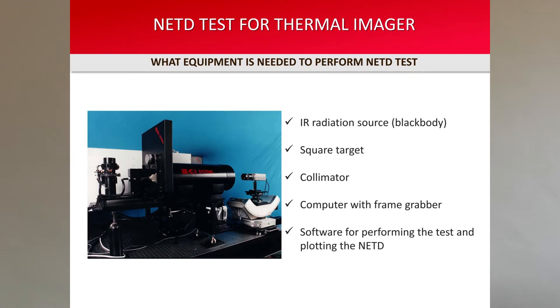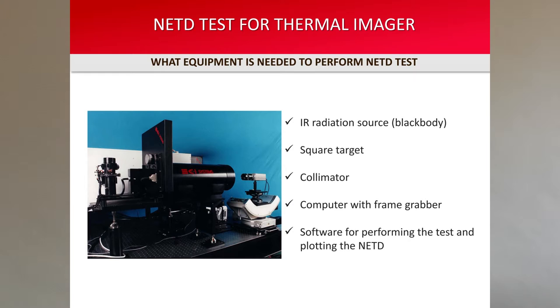To run the NETD test you need: first, an infrared radiation source, better known as a black body; second, a square target; third, a collimator; fourth, a computer with frame grabber; and fifth, software for performing the NETD test.